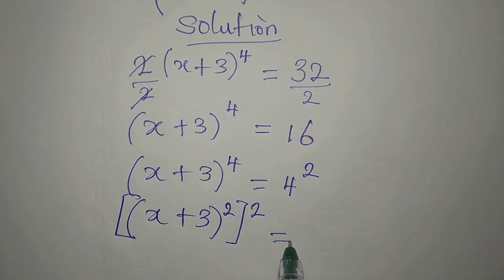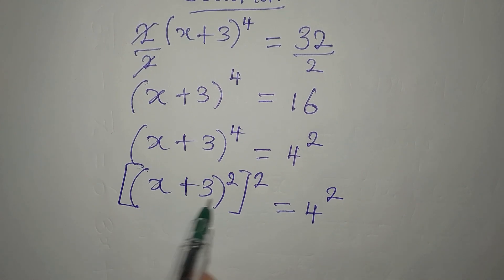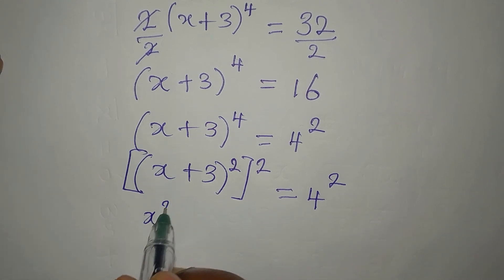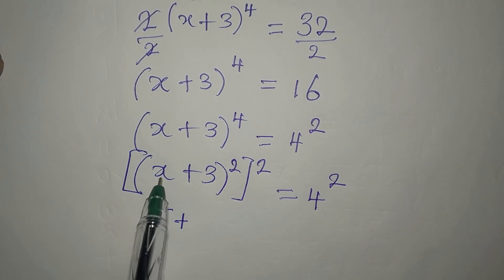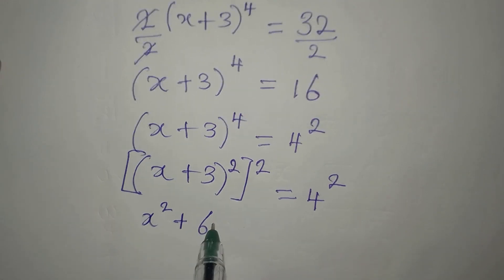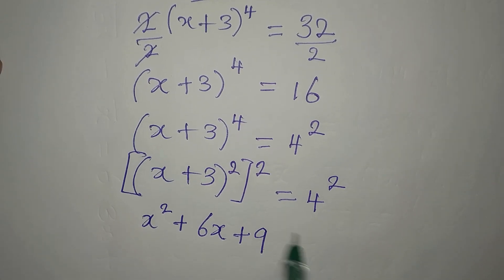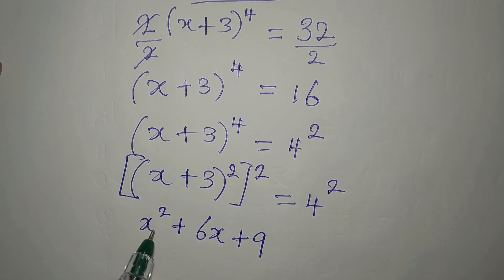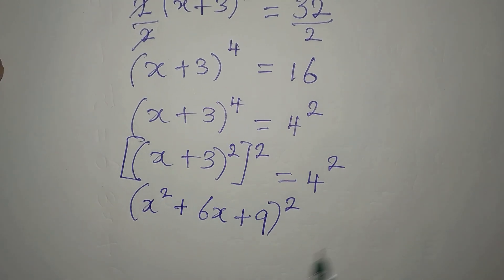This is equal to 4 to the power of two. Now if I expand what I have inside, I get x squared plus two times x times three, which is 6x, then plus nine. So the expansion of (x + 3) to the power of two is x squared plus 6x plus nine.